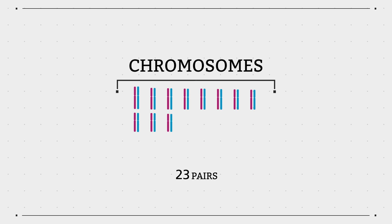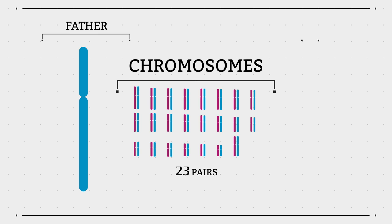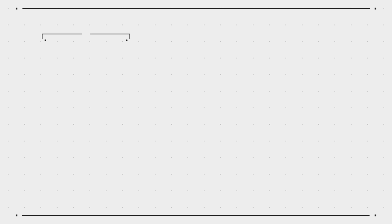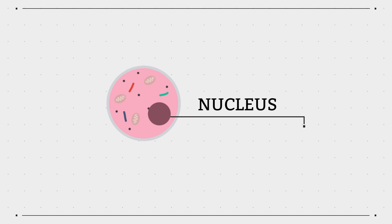Humans have 23 pairs of chromosomes, with one of each pair inherited from our father and the other from our mother. Chromosomes are located in the nucleus of a cell.